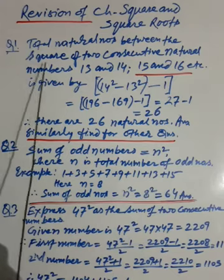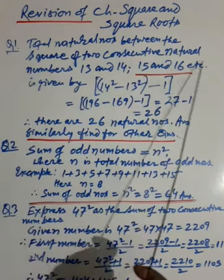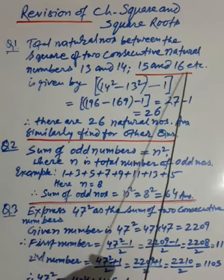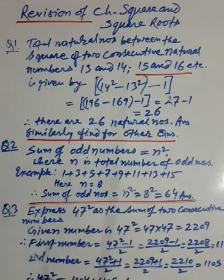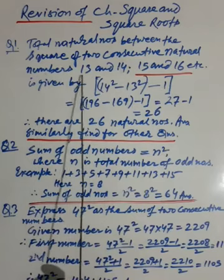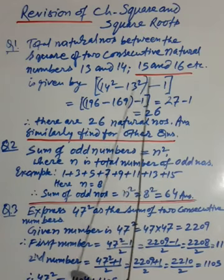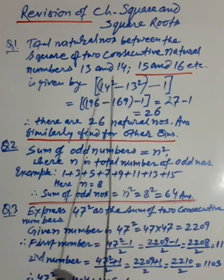Find the total natural numbers between the square of two consecutive natural numbers. Consecutive natural numbers means 13, 14, 15, 16, 17, 18, like that. You can find out by this formula: the total number of natural numbers lying between the squares of two natural numbers is the square of the greater number minus the square of the smaller number, then minus 1.